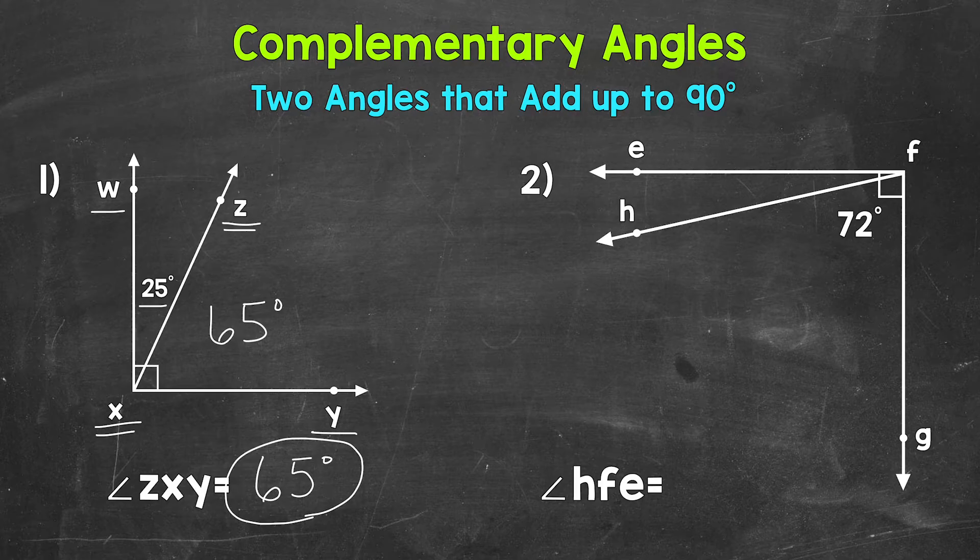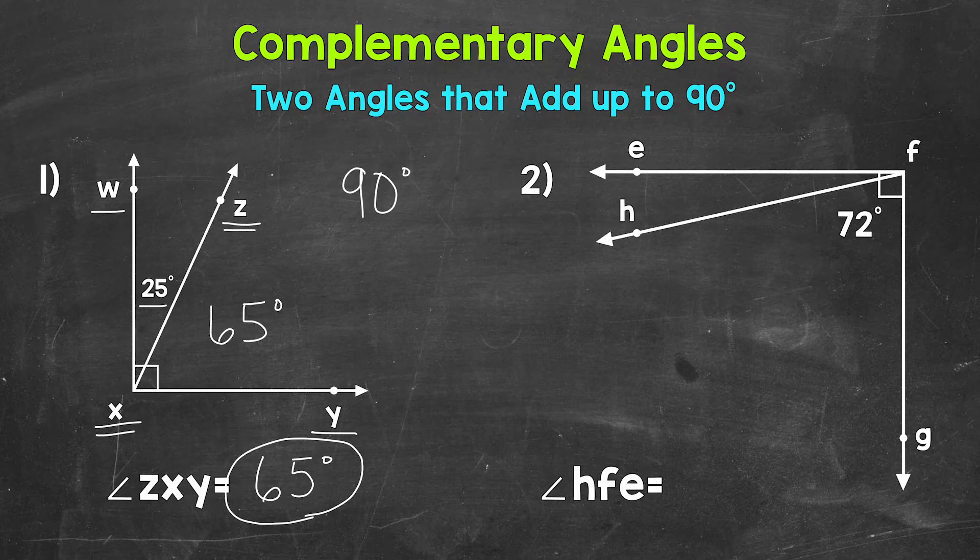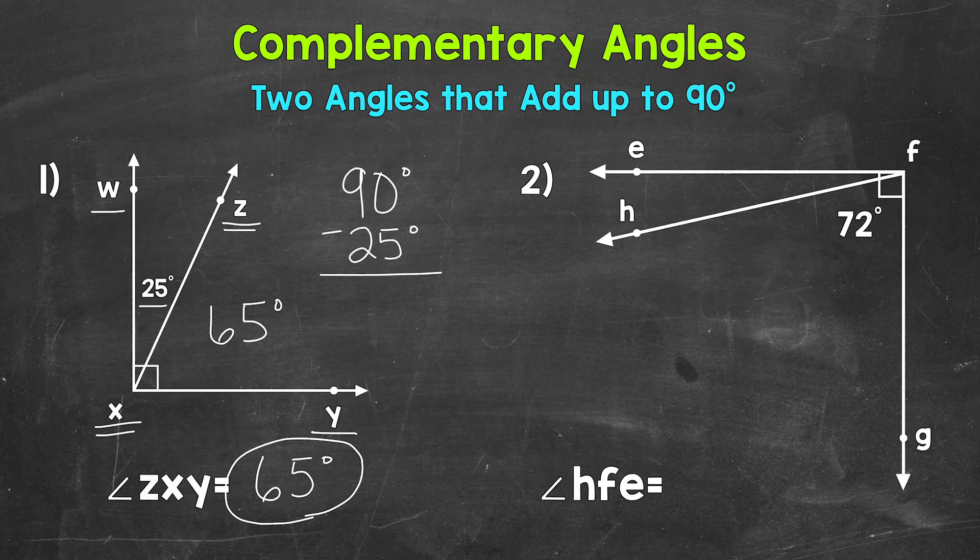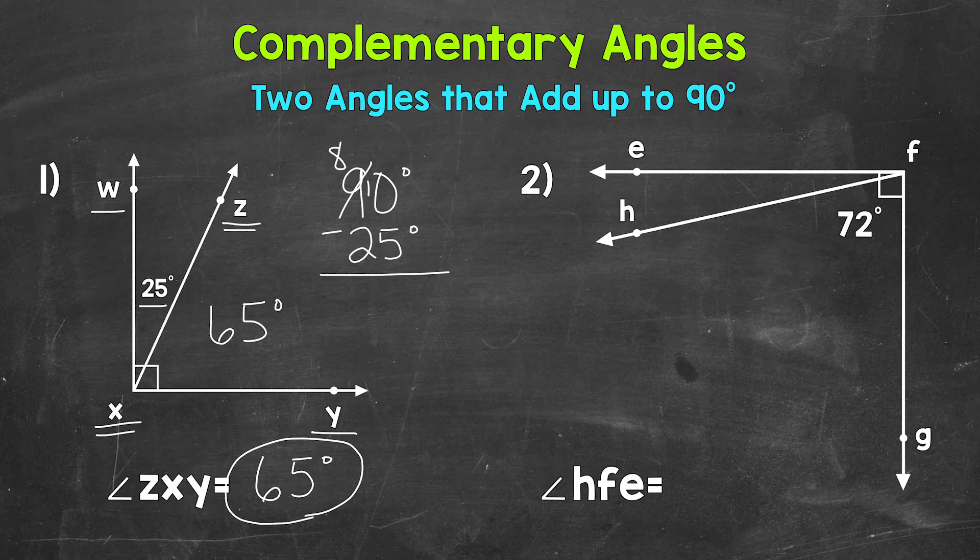If you can figure these out mentally, that works for sure, but if not, that's fine too. What we can do, we can take the 90 degrees that we know these two angles are going to add up to. So let's write 90 degrees, and we can subtract the angle measure that we are given. So 90 degrees minus 25 degrees. Now we're ready to subtract. So we have 0 minus 5. We need to borrow. Let's borrow from the 9 here. And we have 10 minus 5, which is 5. And then 8 minus 2 is 6. So we get 65 degrees that way as well.